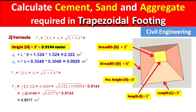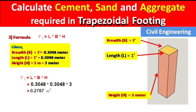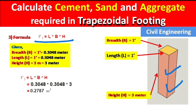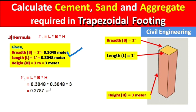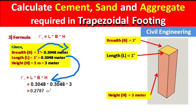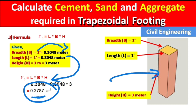For Part 3, the column, we use the simple cuboid formula V = L × B × H. Given: width = 1 foot, length = 1 foot, height = 3 meters. Converting feet to meters and applying the formula, we get V3 = 0.2787 m³.